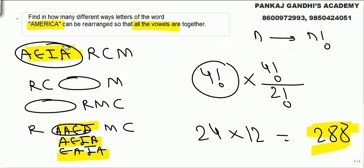Now what we want together is all the vowels. Consider them one thing. They are all together. R, C, M, and this vowels group - 4 things at 4 places, 4 factorial.